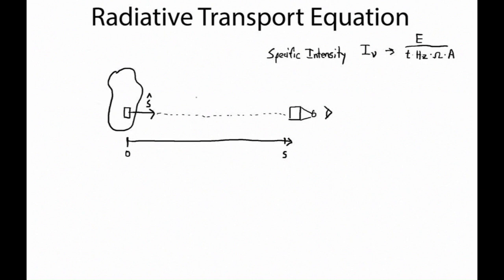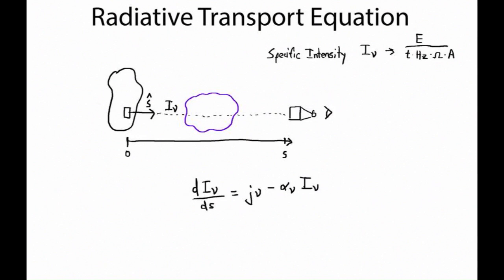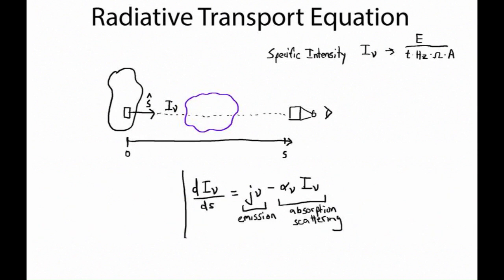Imagine we have some cloud between the source and us. We'd like to know what happens to the specific intensity as it crosses through this cloud — what do we end up observing of the emission that came in on the back side of this cloud as I-sub-nu, and what do we receive on the other side? The answer is the radiative transport equation. It says that the change in specific intensity with distance along this line of sight is equal to an emission term, J-sub-nu, which in general can be a function of s, and a second absorption or scattering term, which is generally a function of the specific intensity at each point along the line.